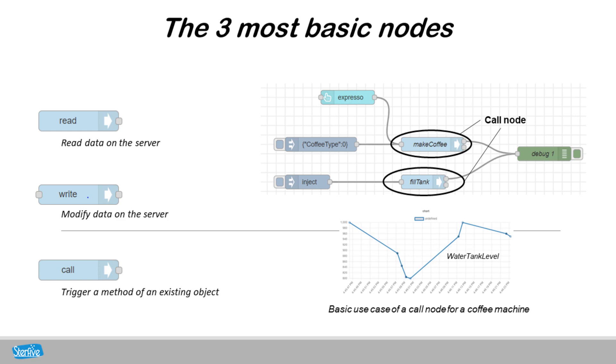The example on the right shows the use of a call node example. We call two methods: Make coffee for making a coffee, and fill tank for filling the water tank. The graph shows the evolution of the water tank level.